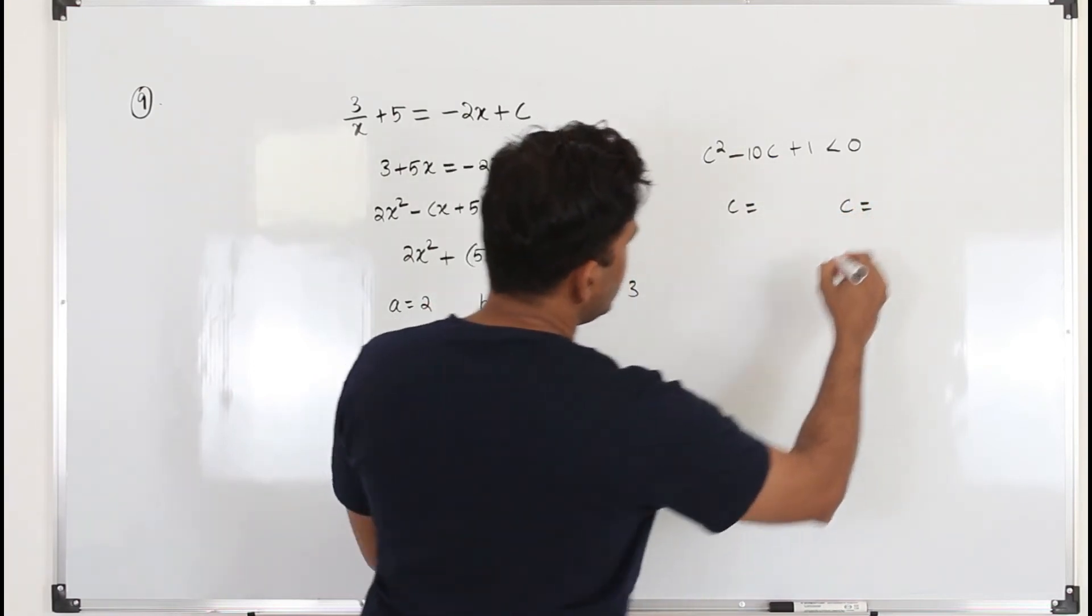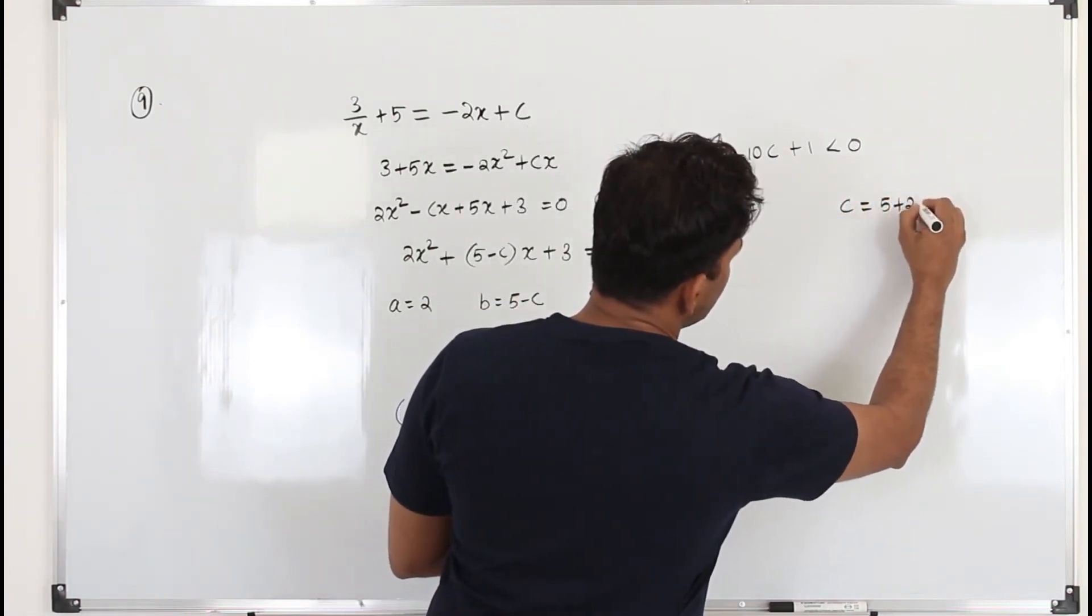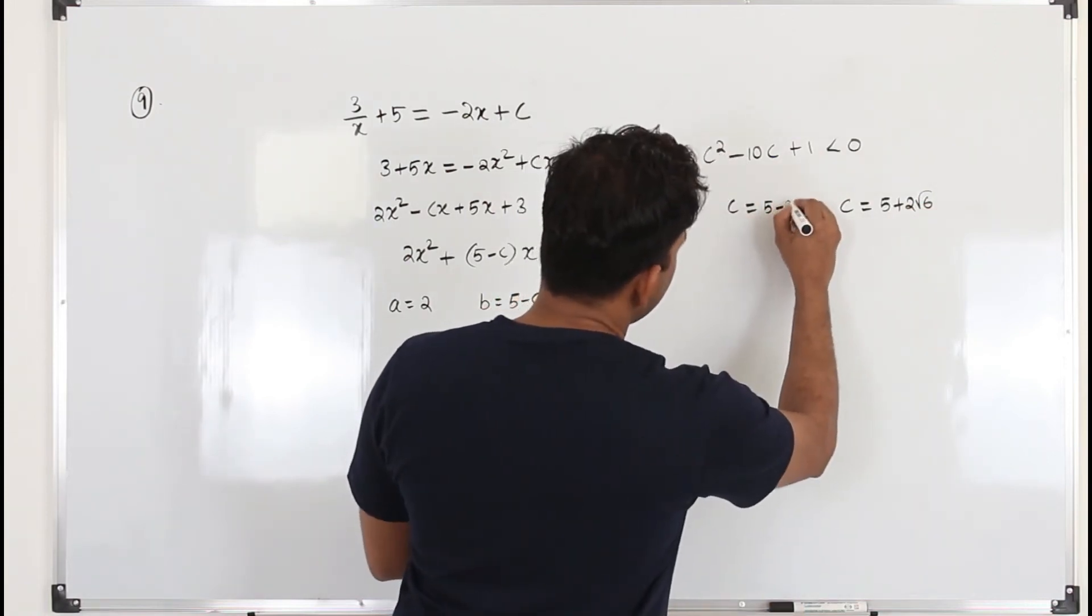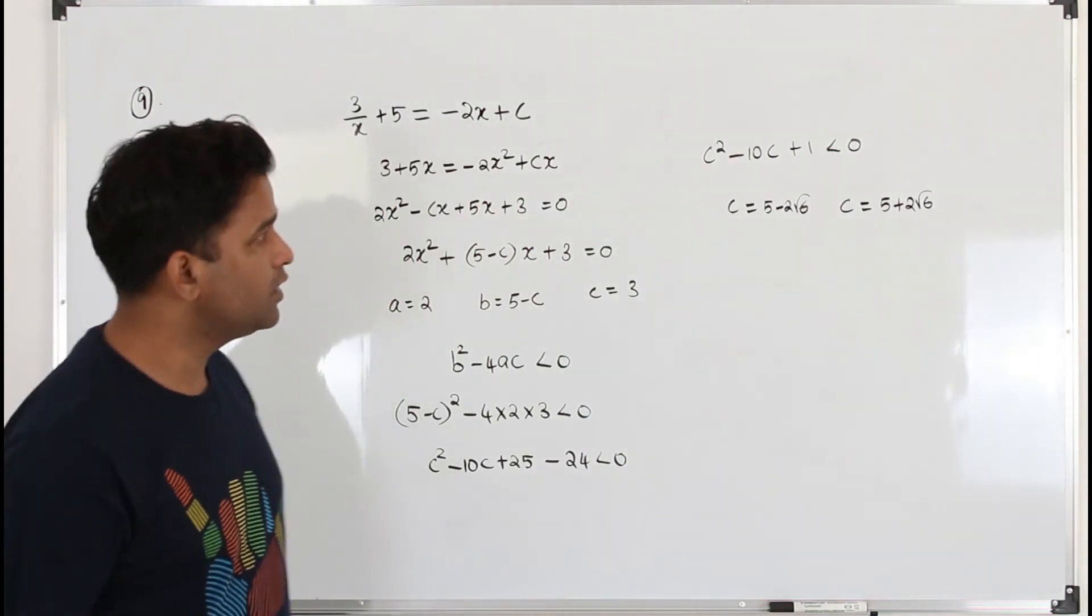The two c values are 5 + 2√6 and 5 - 2√6. You got two c values.